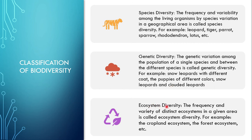Ecosystem diversity: the frequency and variety of distinct ecosystems in a given area is called ecosystem diversity. In a specific area there can be different varieties and frequencies of ecosystems. For example: cropland ecosystem, forest ecosystem — cropland ecosystem is different from forest ecosystem. There can also be marine ecosystem (ocean ecosystem), desert ecosystem, river ecosystem, and mountain ecosystem.